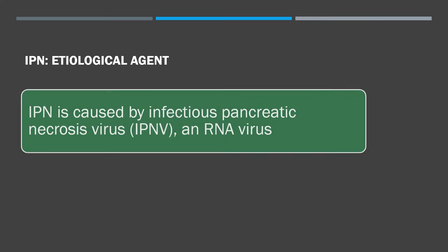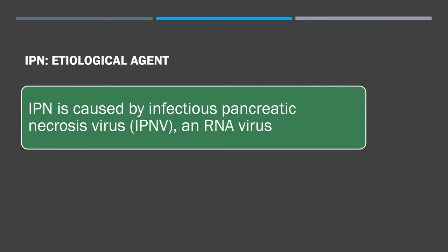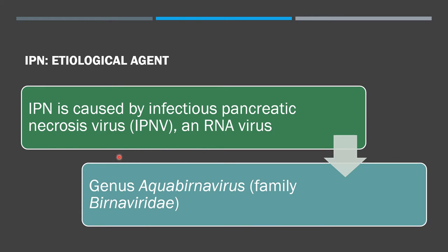For the etiological agent, infectious pancreatic necrosis, or IPN, is caused by infectious pancreatic necrosis virus, IPNV, which is an RNA virus. It belongs to the genus Aquabirnavirus under the family Birnaviridae.